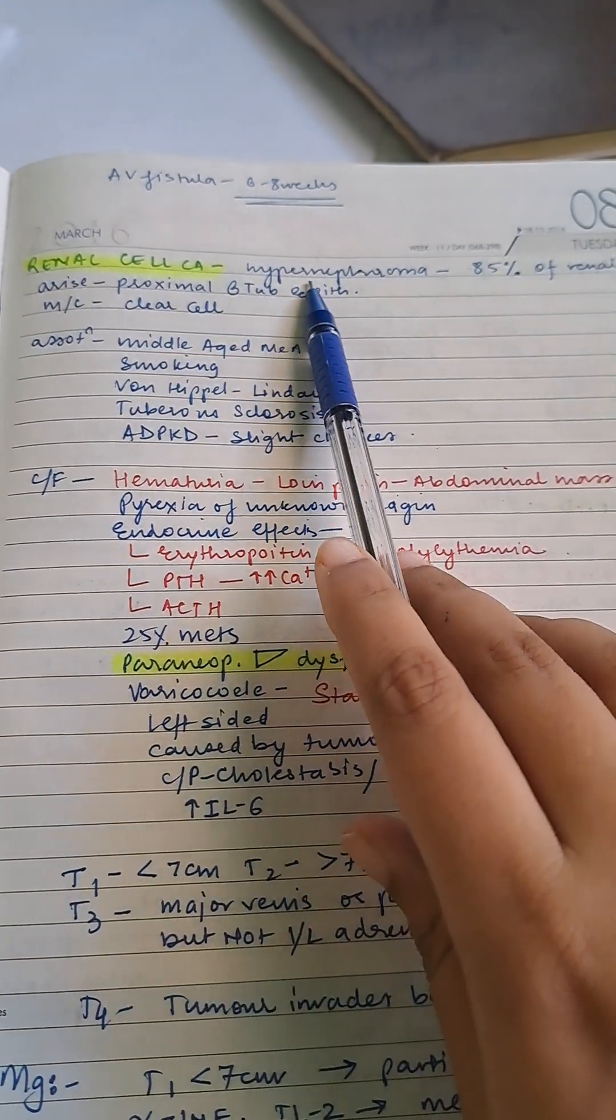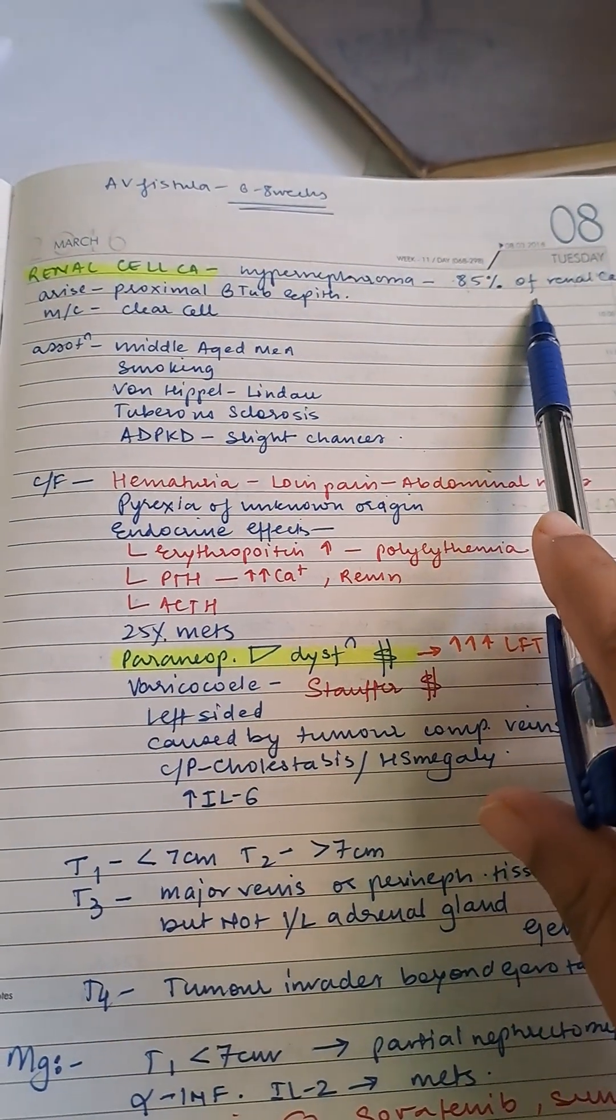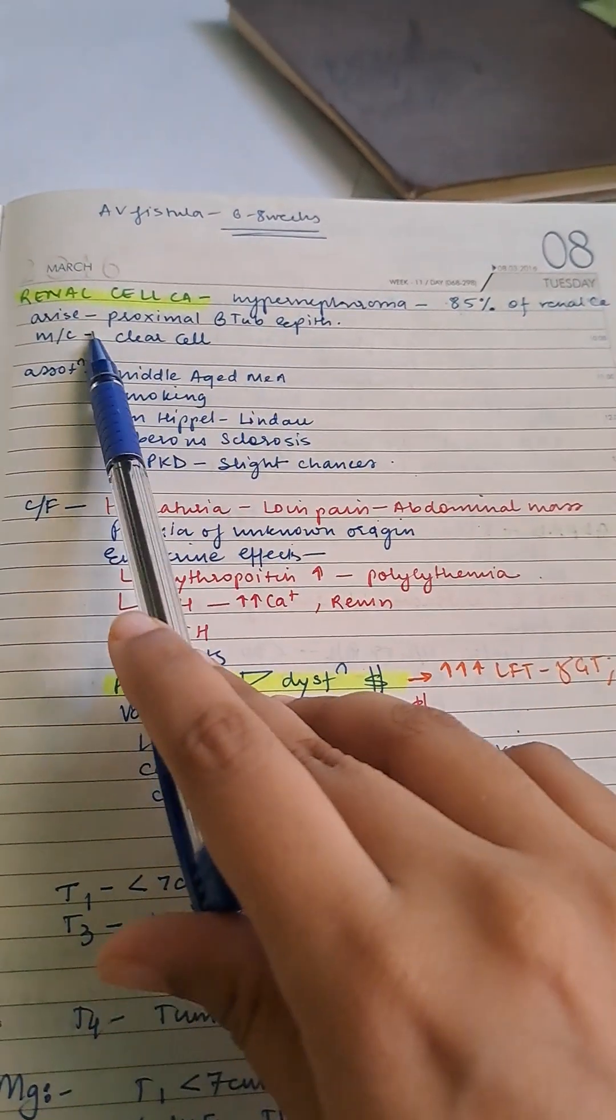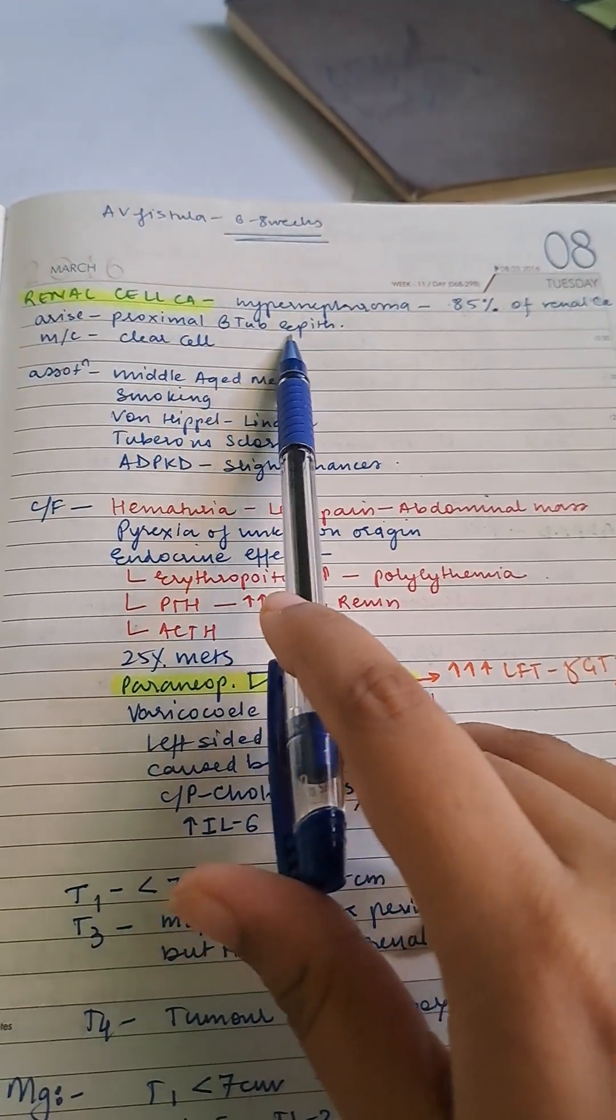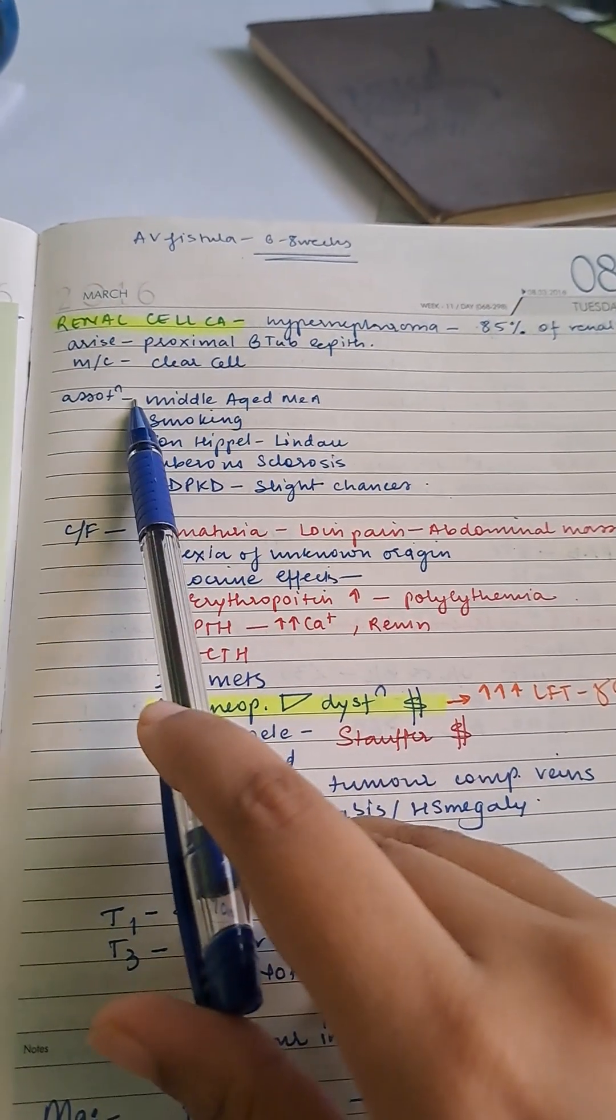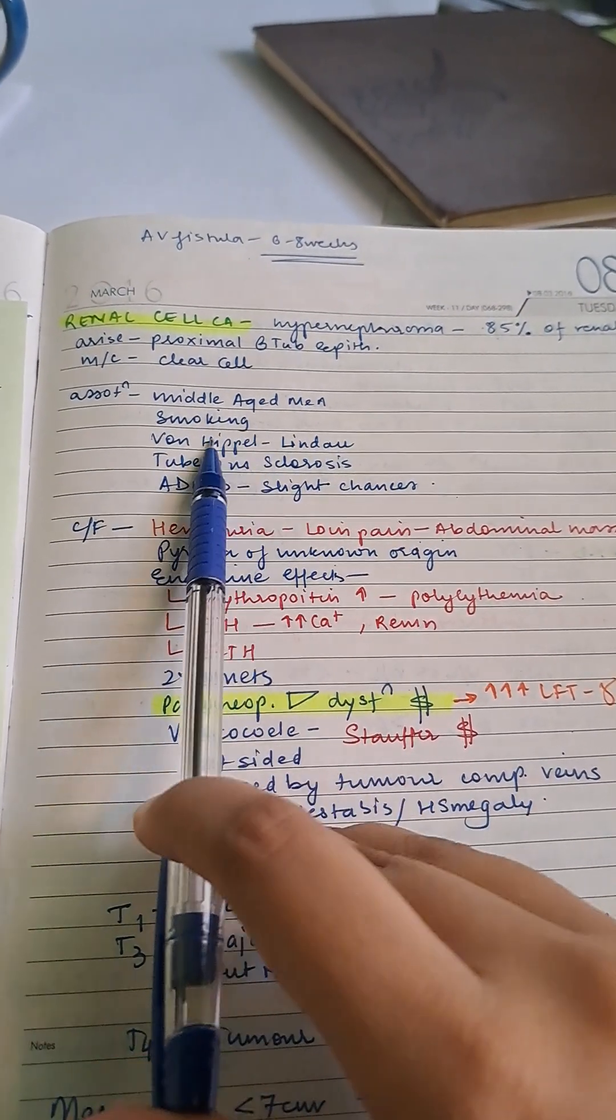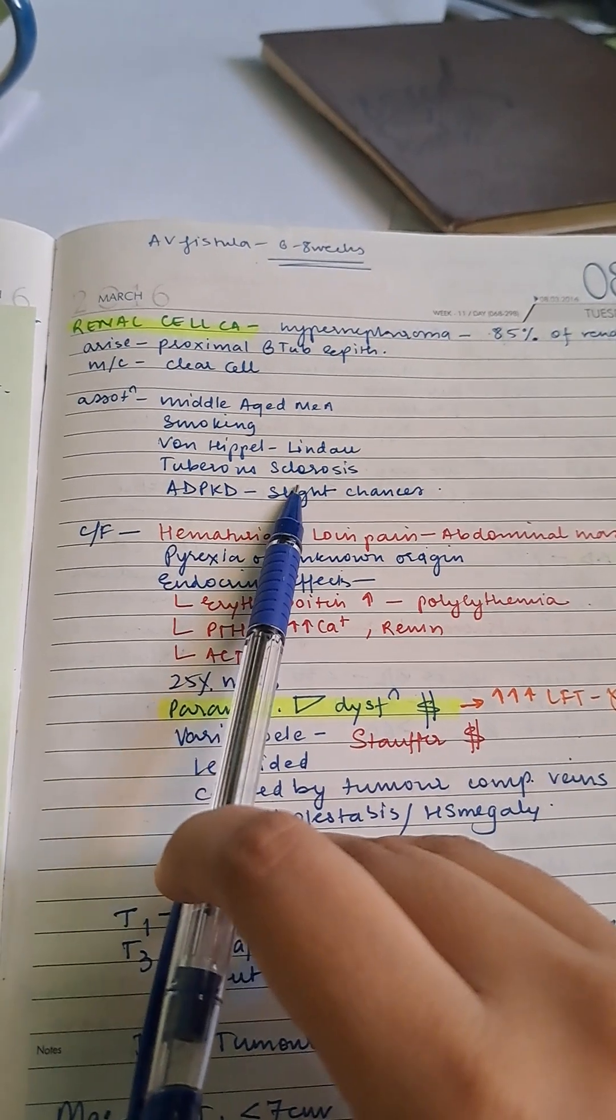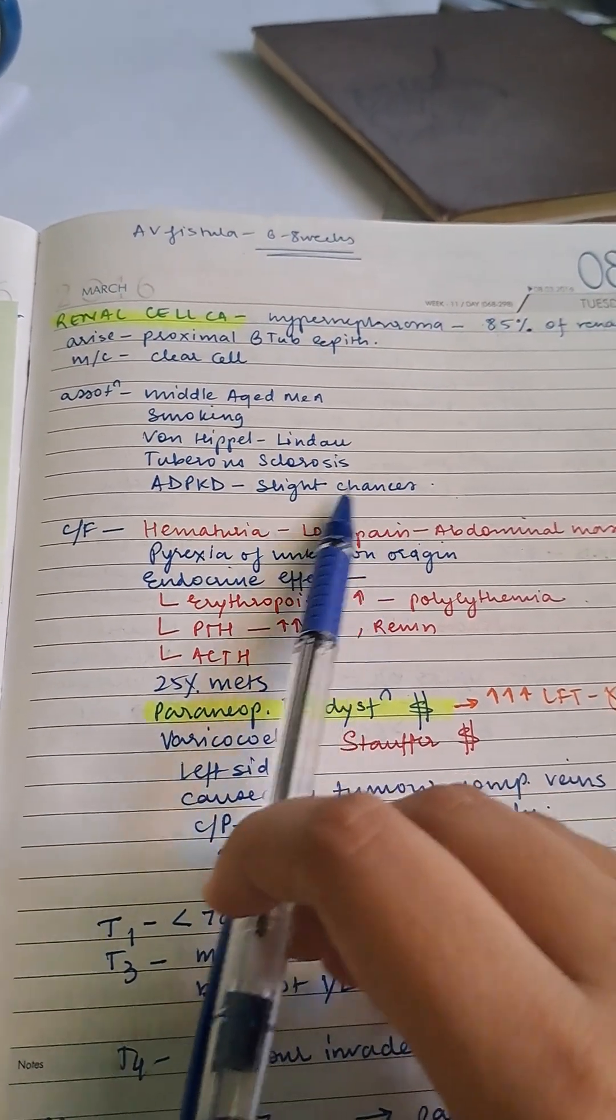Renal cell carcinoma is hypernephroma, 85% of renal cancer, arising from proximal renal tubule epithelium. The most common type is clear cell. Associations include middle-aged men, smoking, Von Hippel-Lindau, tuberous sclerosis, and ADPKD with slight chances.